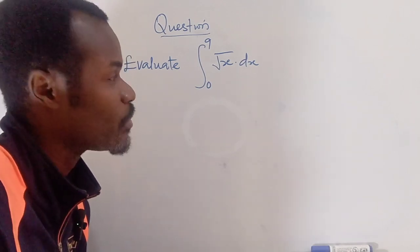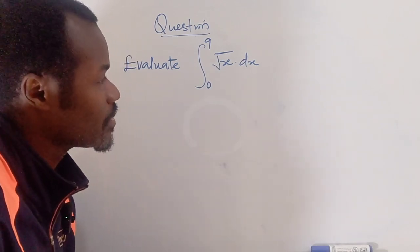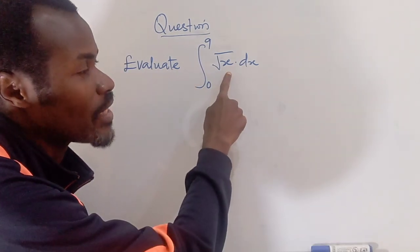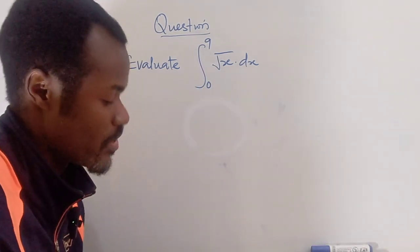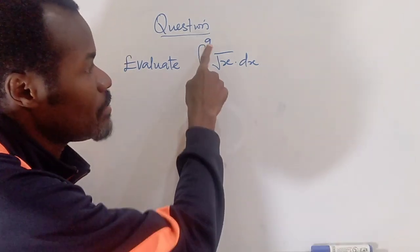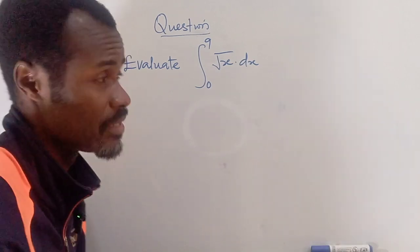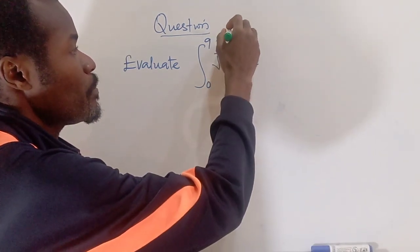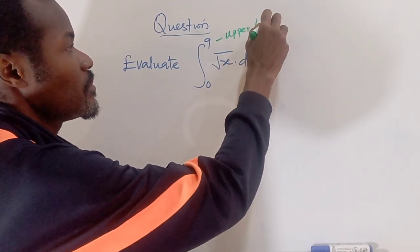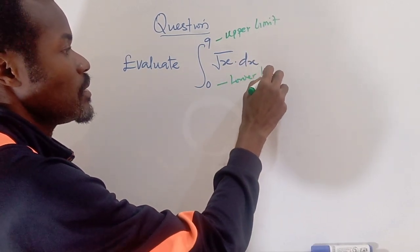Today we are going to look at a simple problem on the board on working integration with equations. We should evaluate the integral of x with respect to x, given the upper and lower limits. The upper limit is 9 and the lower limit is 0.